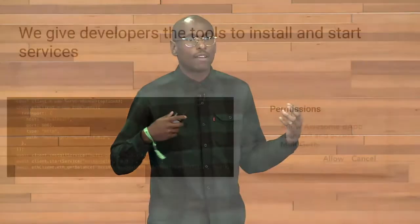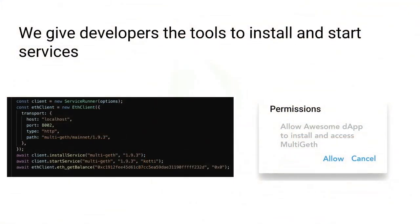As a developer, what we've done is provide the tools to make it such that in five lines of code you can simply start a decentralized service and prompt the user to install it. You can also request access to run it. On the left is the code to do that, and on the right is a proposal we have for the permissions to allow it. So it should be as easy as installing or running an app on your phone.